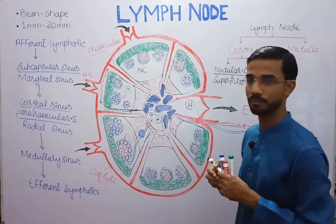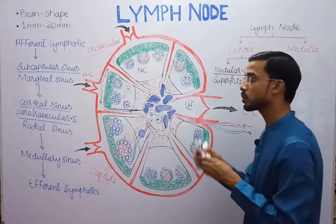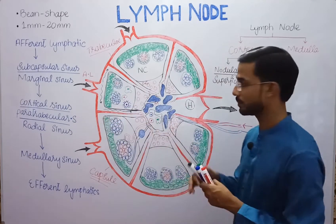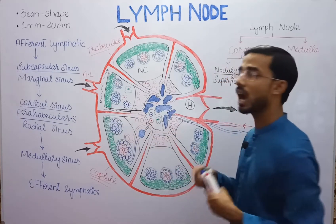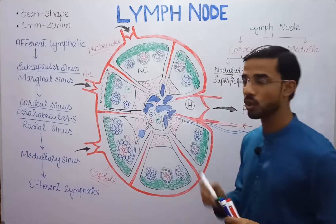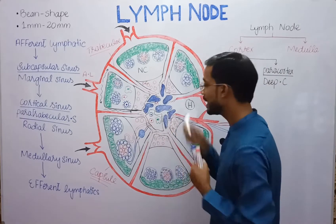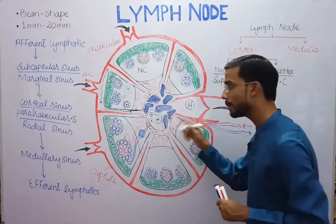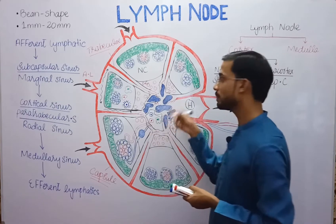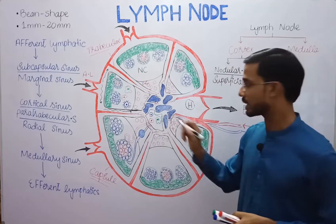After the subcapsular sinus, lymph flows through the cortical region — we call this the cortical sinus. Other names are paratrabecular sinus or radial sinus. After that, lymph moves into the medullary region, and from the medullary region it flows through the medullary sinus.